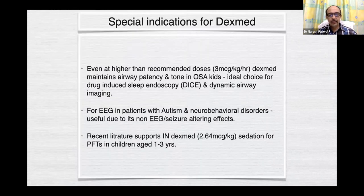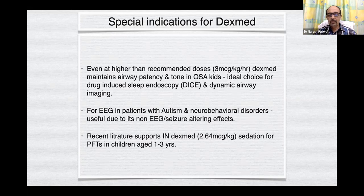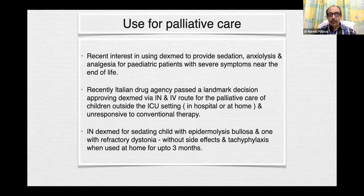Special indications for dexmed: even at higher than recommended doses — around 3 micrograms per kg per hour — dexmed maintains airway patency and tone in obstructive sleep apnea kids, making it an ideal choice for drug-induced sleep endoscopy and dynamic airway imaging. For EEG in patients with autism and neurobehavioral disorders, it is useful due to its non-EEG and non-seizure-altering effects. Recent literature supports intranasal dexmed 2.64 micrograms per kg for sedation for pulmonary function tests in children aged 1 to 3 years. There is also recent interest in using dexmed for pediatric palliative care.